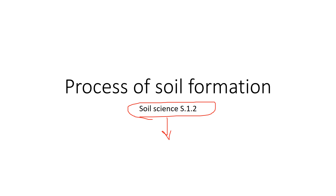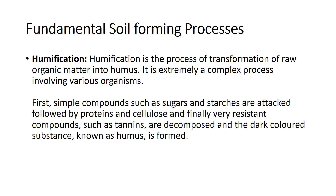Soil is one of the most important natural resources on Earth. All plants and animals depend upon soil for their livelihood, and many humans also depend on soil for their lives. There are various fundamental processes that result in the formation of soil. The first process is humification — humification is the process where humus is being formed.